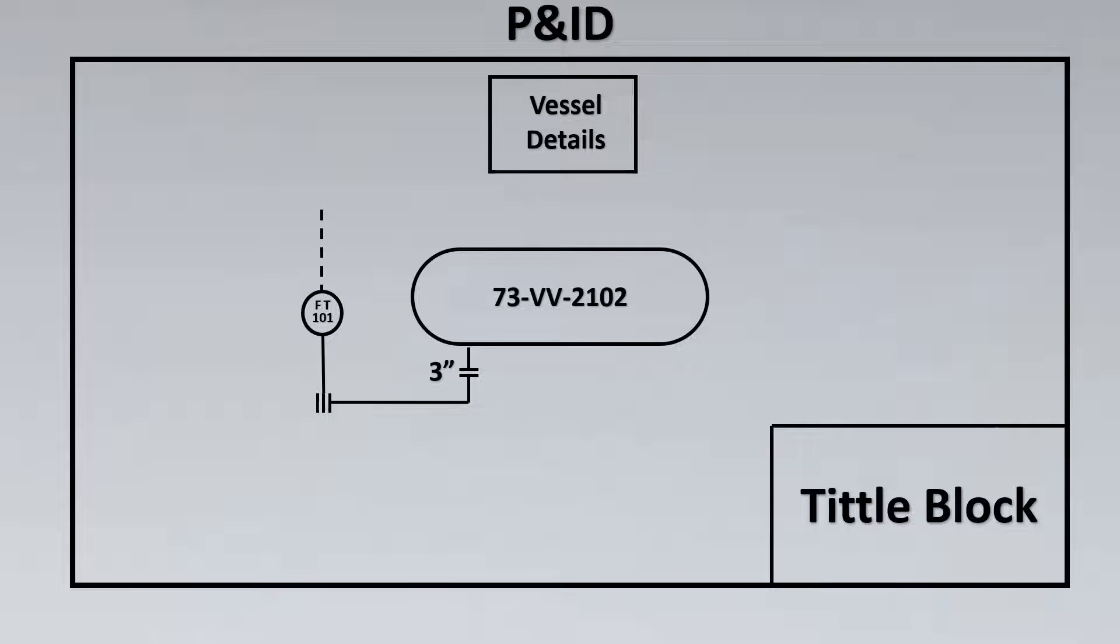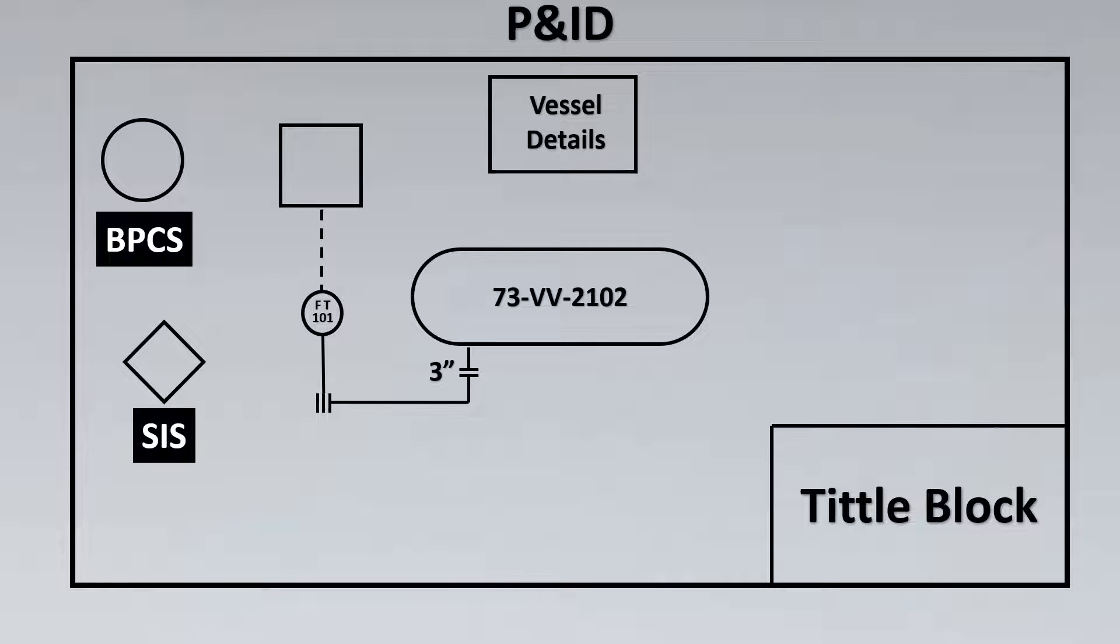Now you see here there's another signal coming from FT which is going to a square box. Remember square box is a very important thing, and the square box has something inside of it which is either a circle or a diamond shape. Now the circle stands for BPCS. Don't be confused, it's a very simple word which means basic process control system. But usually in the instrumentation world we call it DCS, and this is SIS. So remember DCS and SIS are the two systems especially which are put in the control systems, and here either of this will come inside the square.